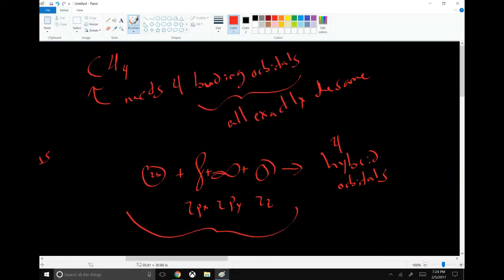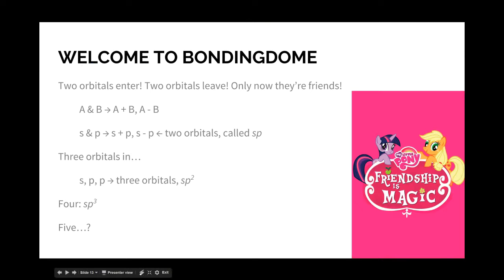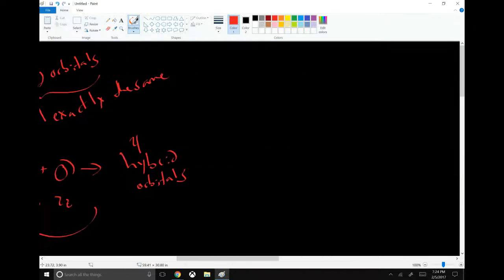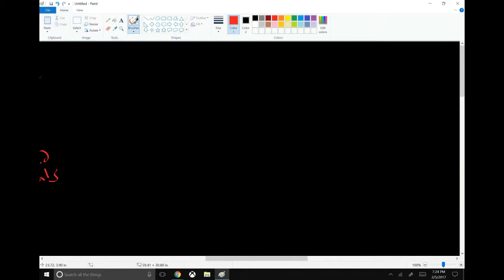So the way it works is that you have as many hybrid orbitals as you had orbitals to begin with. So going back to carbon, carbon had a 2s orbital and then three 2p orbitals. So four orbitals went in, and thus four orbitals come out. And the resulting orbitals are different from the original orbitals, but you have the same number of orbitals.